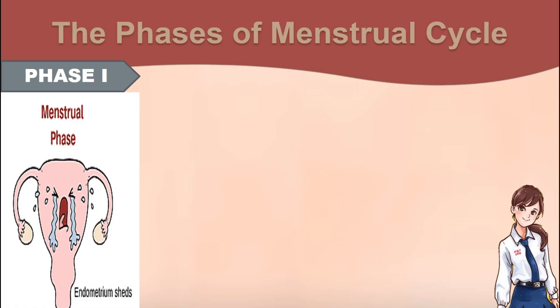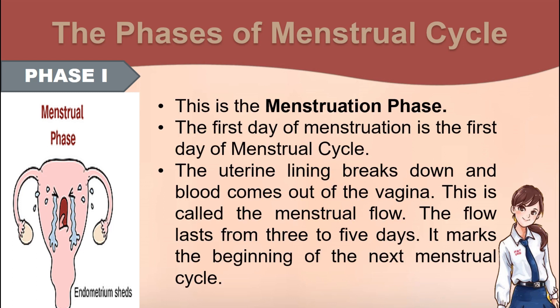Phase 1 – This is the menstruation phase. The first day of menstruation is the first day of the menstrual cycle. The uterine lining breaks down and blood comes out of the vagina. This is called the menstrual flow. The flow lasts from 3 to 5 days. It marks the beginning of the next menstrual cycle.